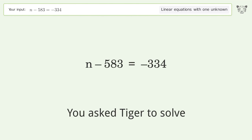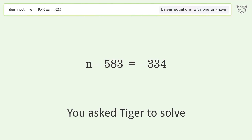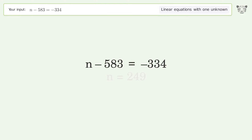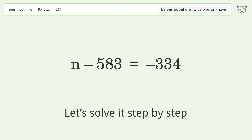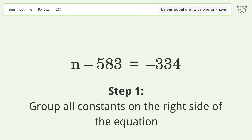We ask Tiger to solve a linear equation with one unknown. The final result is n equals 249. Let's solve it step by step — group all constants on the right side of the equation.